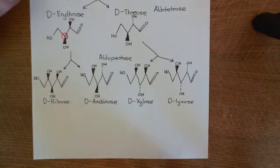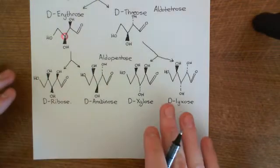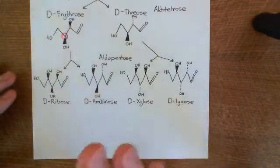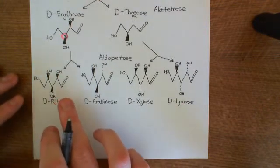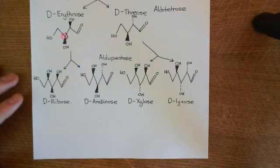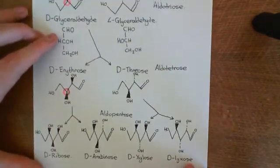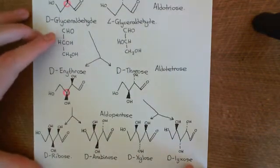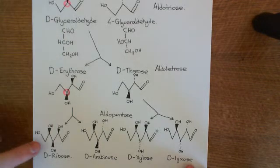So, we are discussing aldoses. We've now got to the aldopentoses, and we're now going to go forward onto the aldohexoses, which are when we've got six carbon atoms. I'm going to move to drawing this sort of structure, which we agreed conveyed the exact same level of information as these structures here.